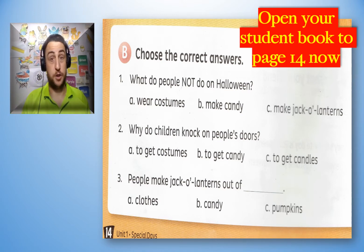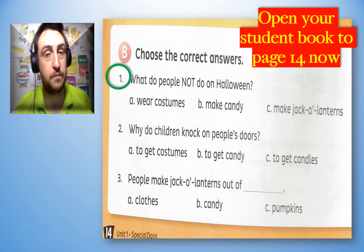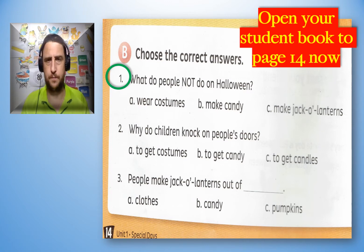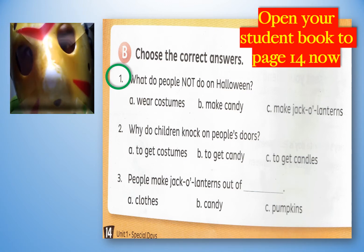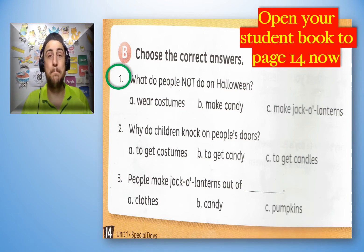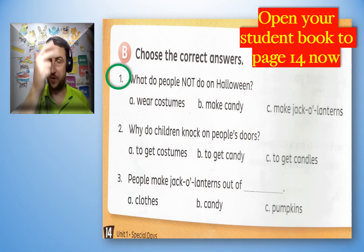Question number one — remember, this is from the story. What do people NOT do on Halloween? A: Wear costumes. B: Make candy. C: Make jack-o'-lanterns. What do they not do? Circle A, B or C.